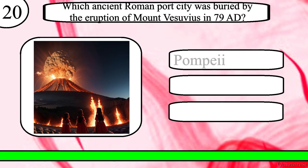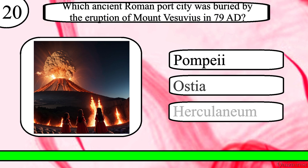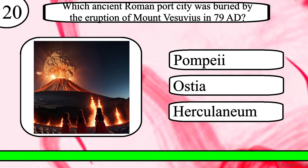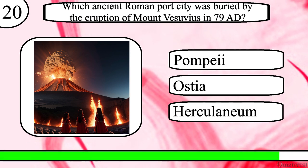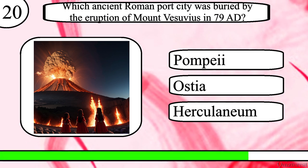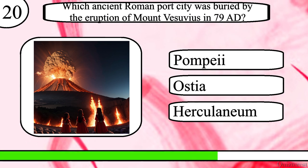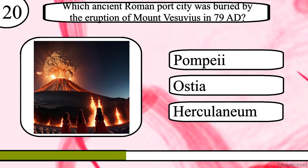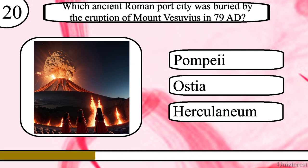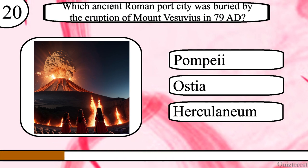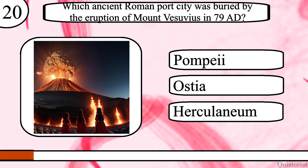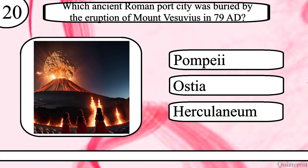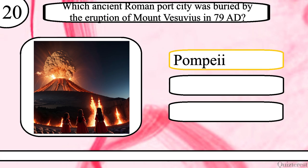Question 20. Which ancient Roman port city was buried by the eruption of Mount Vesuvius in 79 AD? Pompeii, Ostia or Herculaneum? The correct answer is Pompeii.